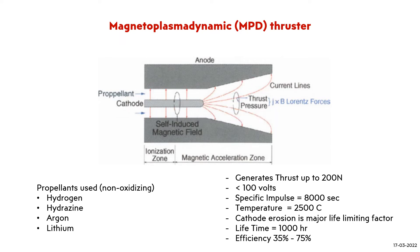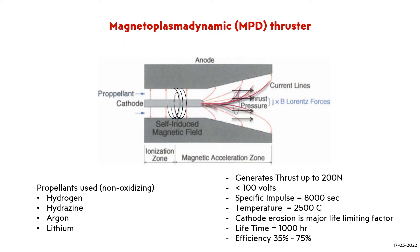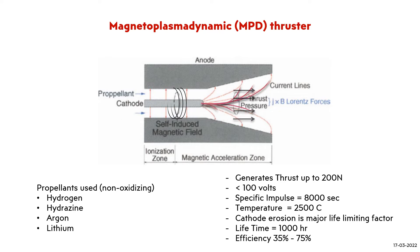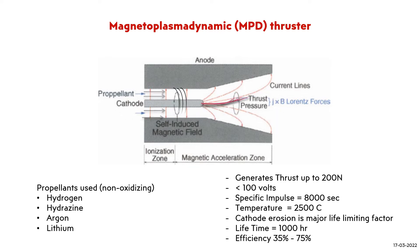An additional external magnetic field can be added using permanent magnets or coils around the anode to increase the performance, which is also known as the Applied Magnetic Field MPD Thruster. MPD Thrusters can generate high thrust up to 200 Newtons and can handle very high power levels at a specific impulse of 8000 seconds.